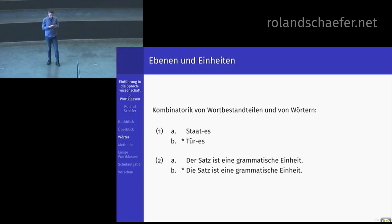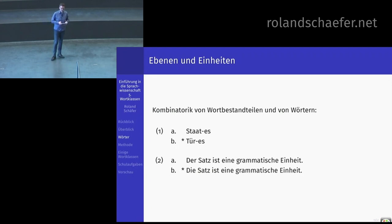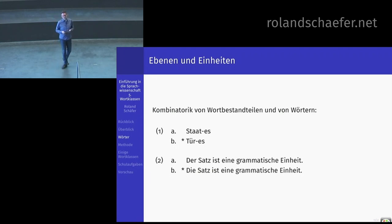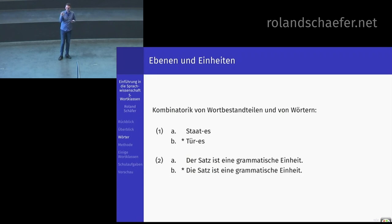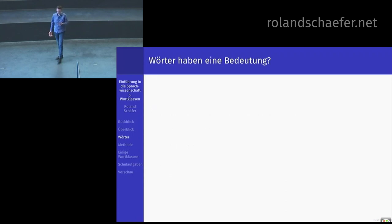Woran liegt es, dass die Satz nicht geht? Sie werden sagen: weil das Genus falsch ist. Sagen Sie nie wieder hier an der Universität 'Geschlecht' – sagen Sie wenigstens grammatisches Geschlecht oder Genus. Genus ist eigentlich besser. Und das müssen wir modellieren: Wie kann man diese Wörter zusammensetzen? Das sind letztlich die Wörter.